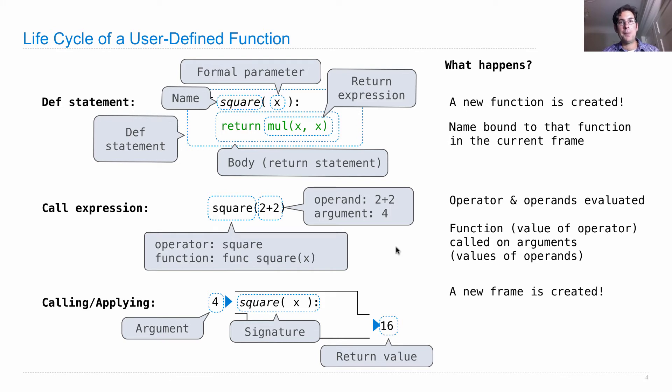Okay, the way in which a function that was defined by the user is called or applied is in the following steps. First, a new frame is created, then the formal parameters of the function are bound to the arguments that are passed in, in that new frame, and then the body of the function, that return expression, is executed in that new environment.